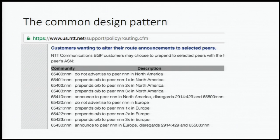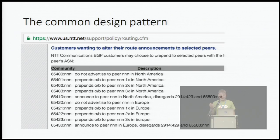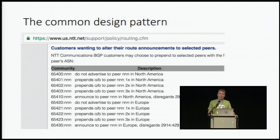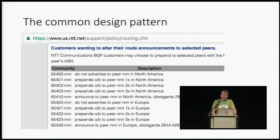This is a screenshot from our routing policy overview, where you see the pattern that if you send us 65400 colon and then the ASN of a peer of ours, that will trigger certain actions in certain geographical regions. And the majority of IP networks have strategies like this available to their customers. And I think this also starts to highlight what the issue is.